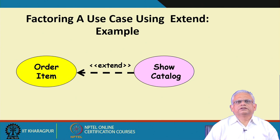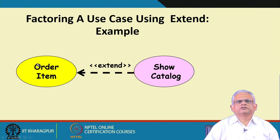For example, during 'order item' on an e-commerce portal, a user may not need the catalog — they know the item code and go ahead and order directly. But some users during the ordering process might need the catalog, so there may be a button on the user interface for 'order item' that, when clicked, shows the catalog with details of the item: item code, warranty, price, etc.